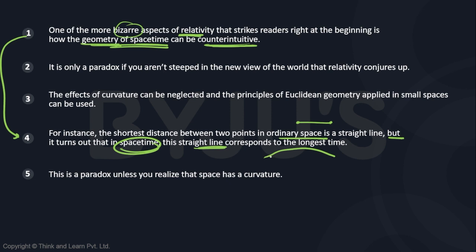This is actually the longest distance. The straight line becomes the longest distance here. Why? Why would that happen? Because space has a curvature. Space has a curvature.